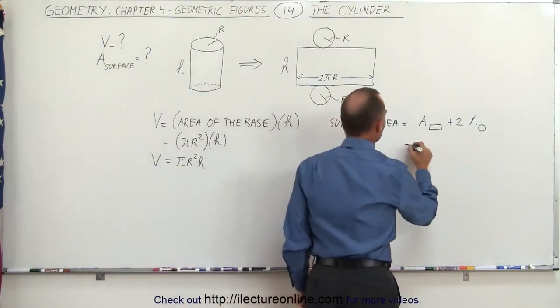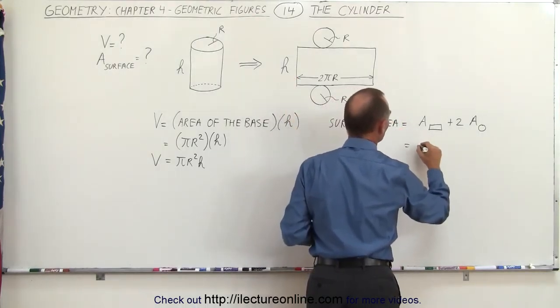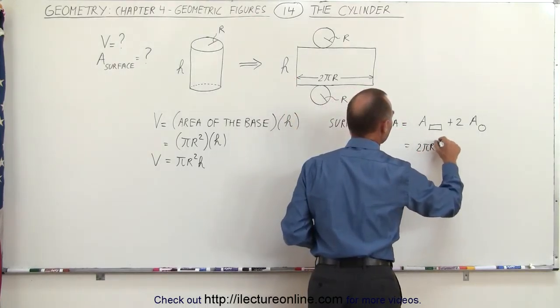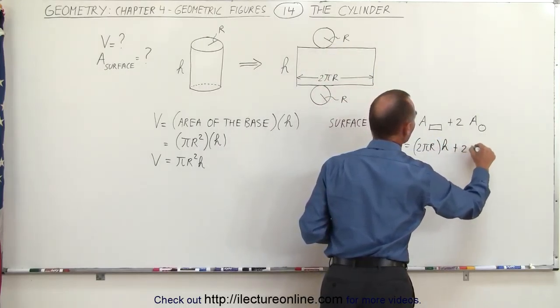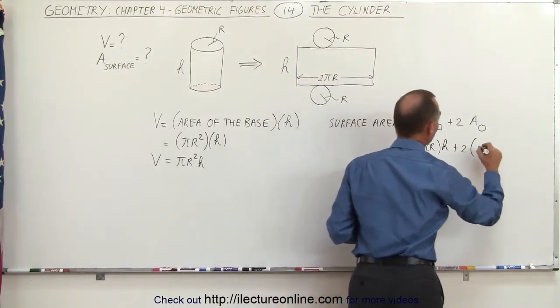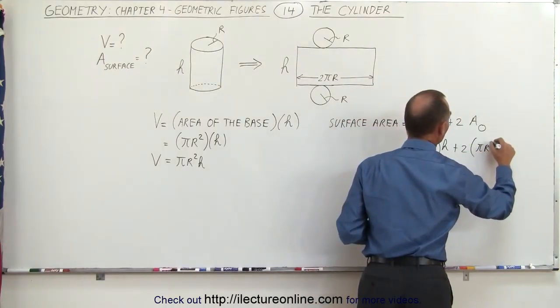The area of the circle would be equal to the length times the width. The length would be 2 pi r and the width would be the height of the cylinder which would be h, plus two times the area of a circle which would be pi r squared.